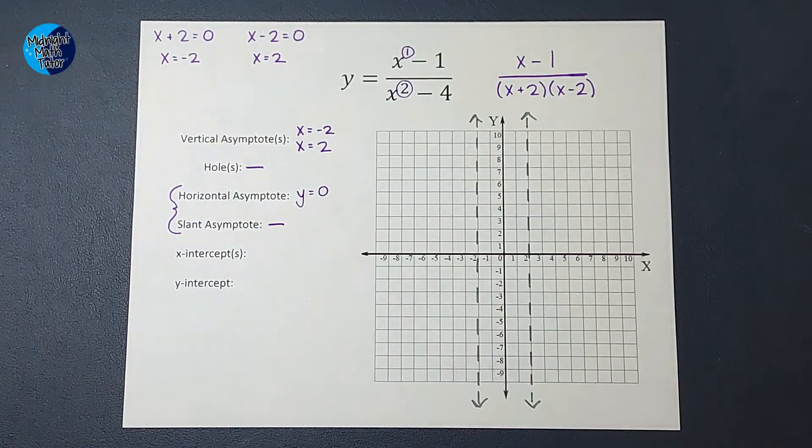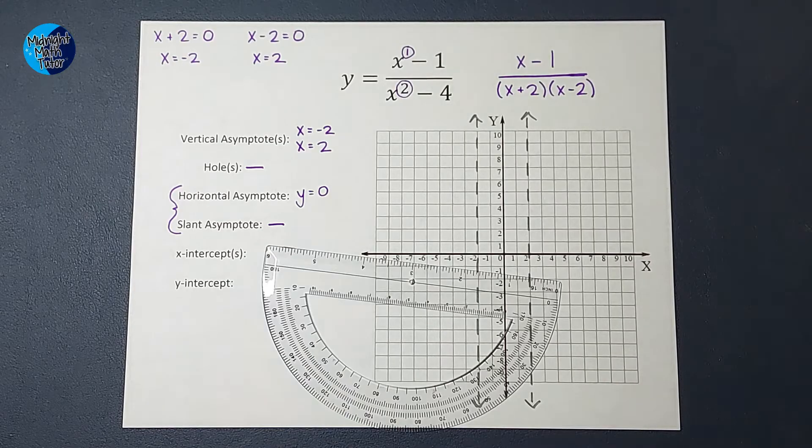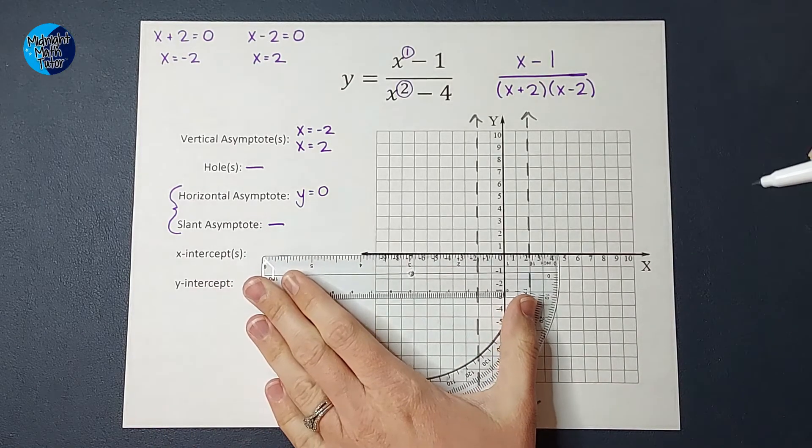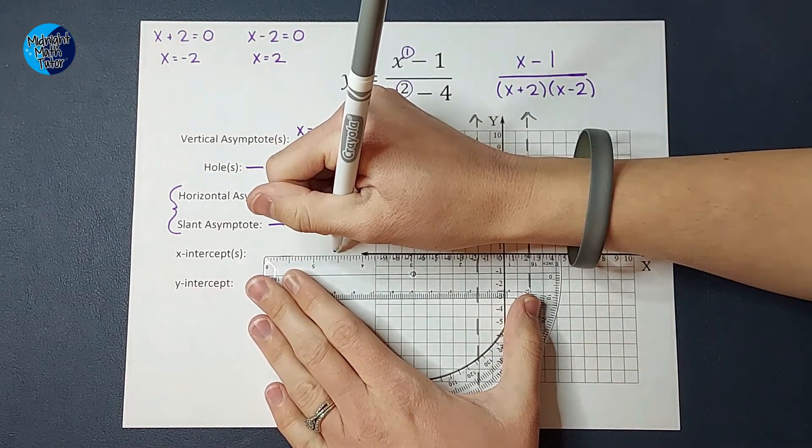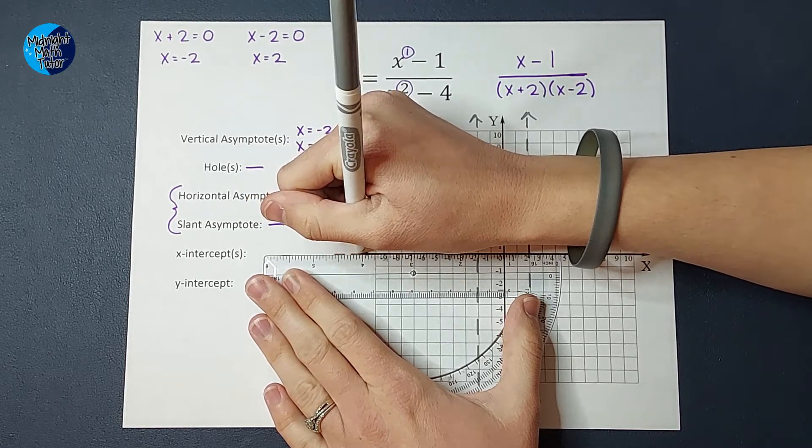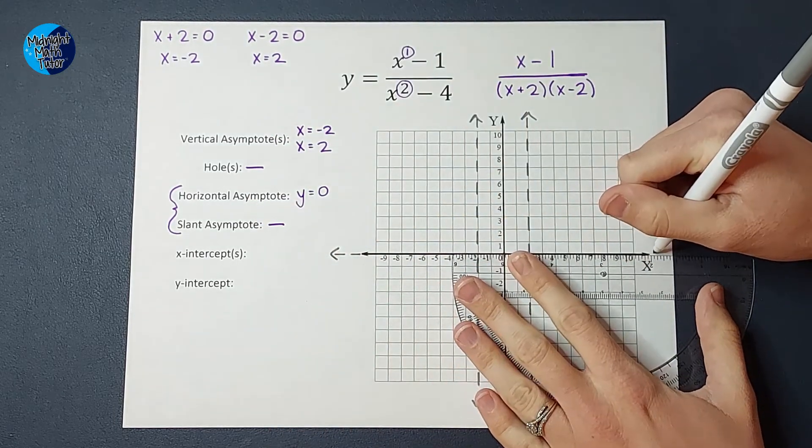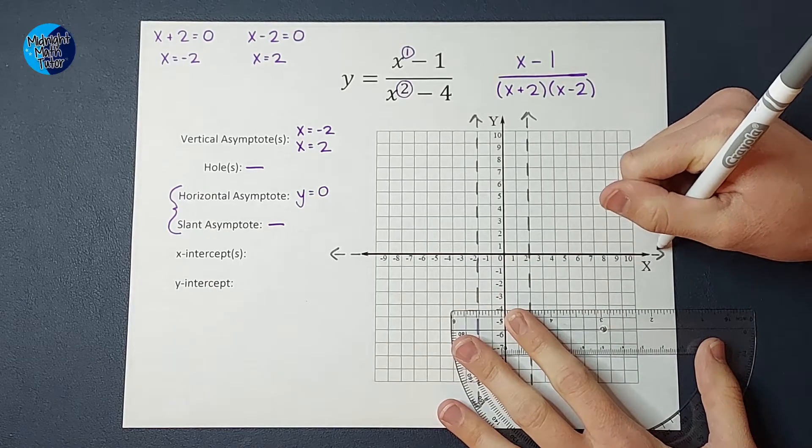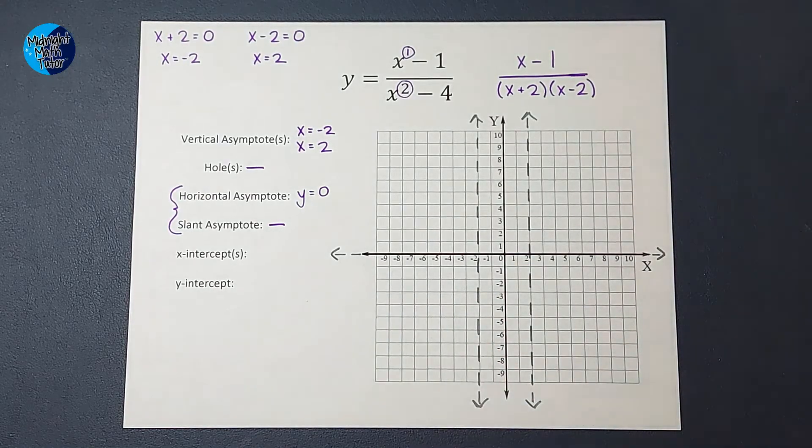If our top degree is greater than the bottom degree, there's no horizontal asymptote. You check for a slant by doing long division. If they're equal to each other, you divide leading coefficients. If your top degree is less than your bottom degree, like in this example, your horizontal asymptote is y equals 0. So for this guy, my horizontal asymptote is y equals 0. There is no slant asymptote. All right, so I'm going to go ahead and represent this on my graph with a dotted line. It's kind of hard to see when it's right on the x-axis, so I'm just going to kind of draw it on the edges so you can see that it's there. So kind of like that. But it really goes across the whole thing, right?